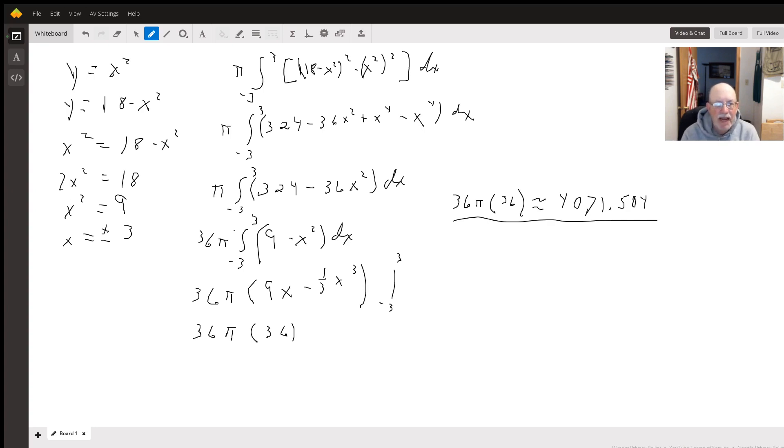Multiply that out. We get 324 minus 36x squared plus x to the fourth minus x to the fourth. Well, the x to the fourth go away, and we get 324 minus 36x squared.